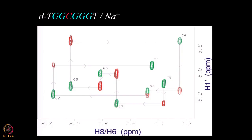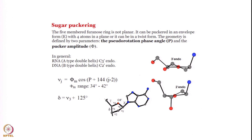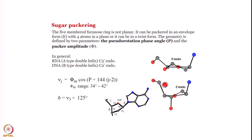Having completed the assignments, you have full assignments of the entire nucleotide and must now determine the structure. The structure consists of the backbone structure and the sugar ring structure. The sugar ring geometry is called sugar puckering, described by the pseudo-rotation angle P. All sugar puckers are classified into two categories: North and South. The North corresponds to the C3' endo geometry, found in A-type DNA or RNA, and the South corresponds to C2' endo geometry, found in B-type DNA.